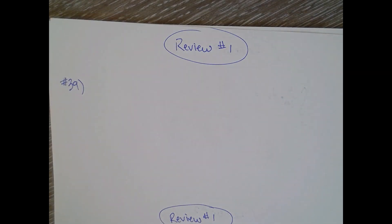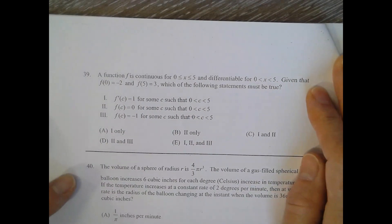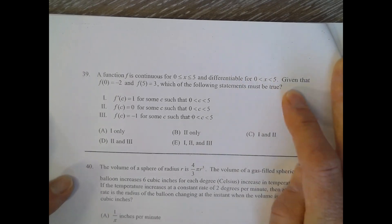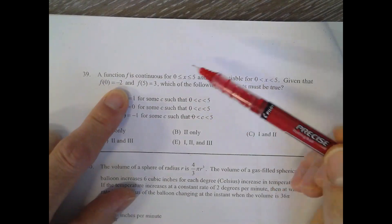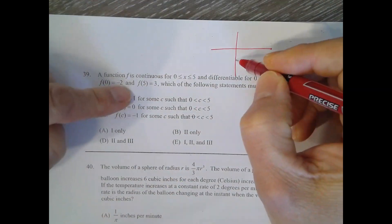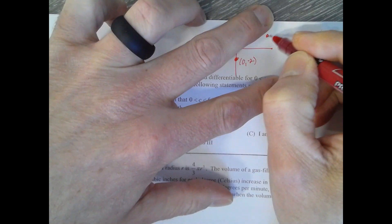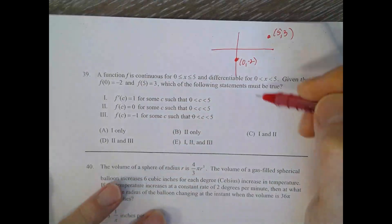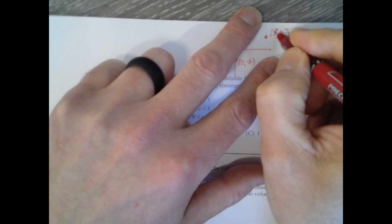Review packet one, number 39. A function f is continuous from zero to five, including zero and five, and differentiable for all interior points. Given that f of zero is negative two and f of five is three. Let's make a little graph here — f of zero is negative two, so that's the point (0, -2), and f of five is three, so somewhere up here is the point (5, 3). Which of the following statements must be true?